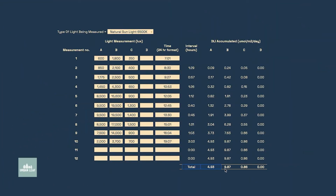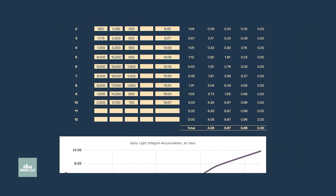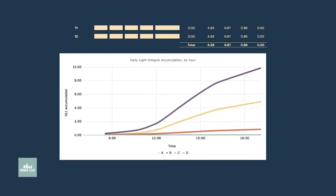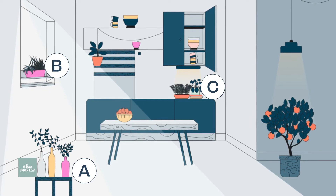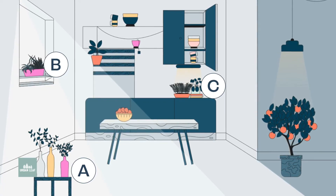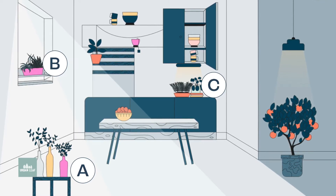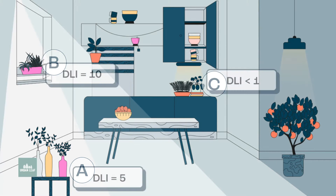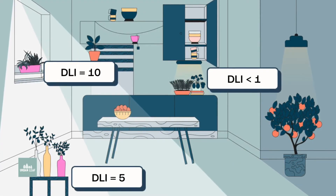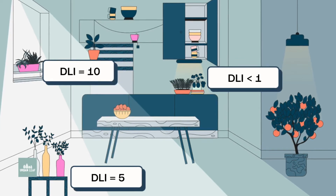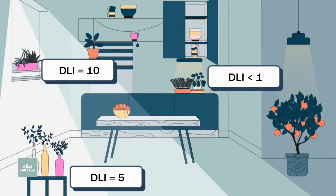In the example on screen, at point A I have a DLI of about 5 micromoles per meter squared per day. This is plenty of light for decorative houseplants, but it's a little bit on the low side for edible plants such as the ones growing in the bottle gardens here. They might be okay with that amount of light during winter, but they'd probably prefer more. Ideally, I'd want to move these bottle garden kits either towards the window where it looks brighter, or underneath the grow light.